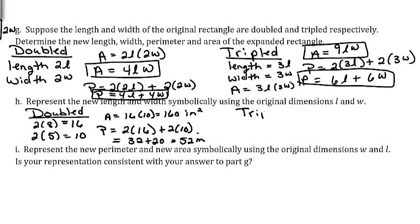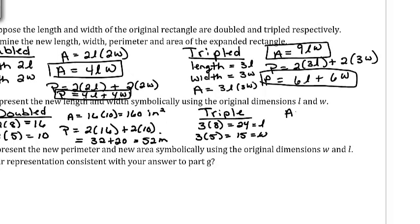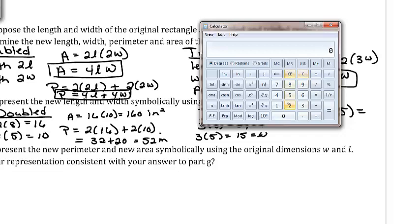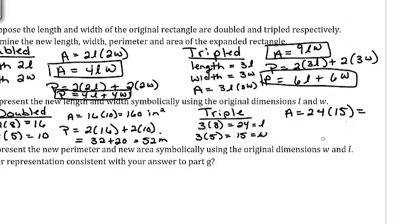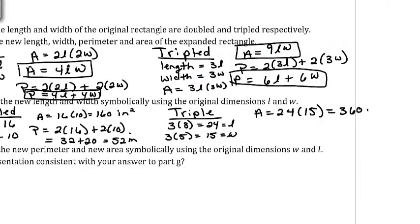For tripling, the new length is 3 × 8 = 24 and new width is 3 × 5 = 15. The area is 24 × 15 = 360 inches squared. The perimeter is 2(24) + 2(15) = 48 + 30 = 78 inches.